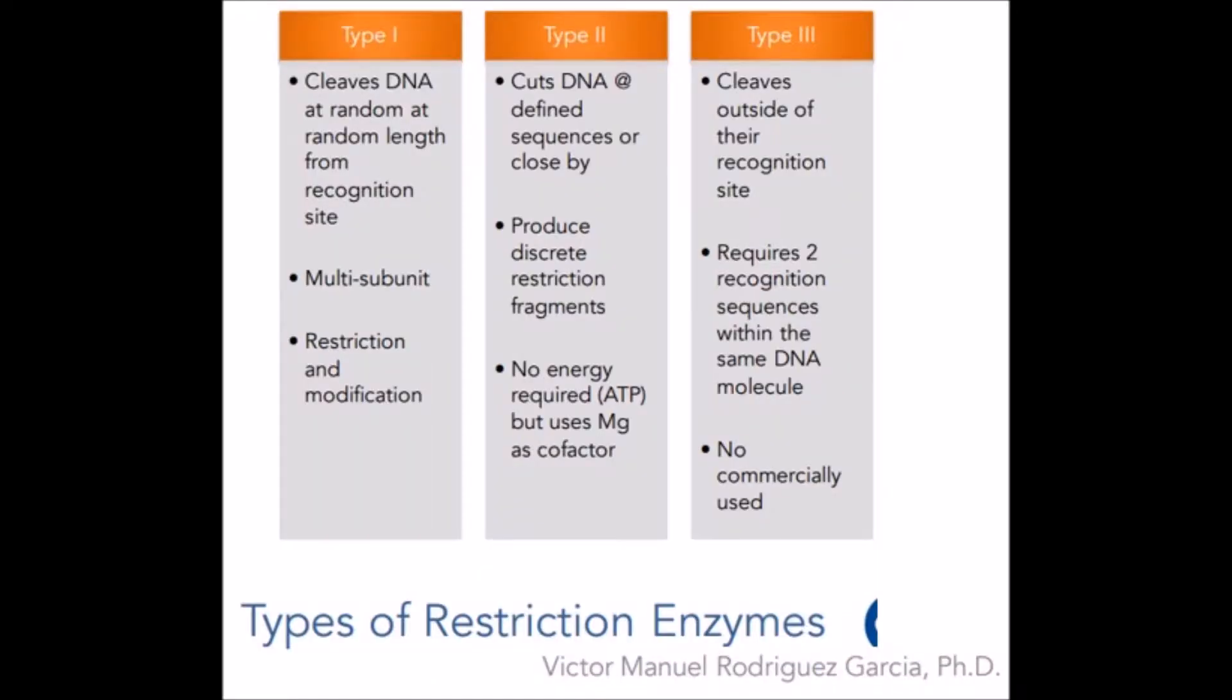We know from Nicholl's book Introduction to Genetic Engineering, restriction enzymes are one of the most important groups of enzymes for genetic manipulation. These enzymes can be found naturally in bacterial cells and play the role of a protective mechanism called the restriction modification system.